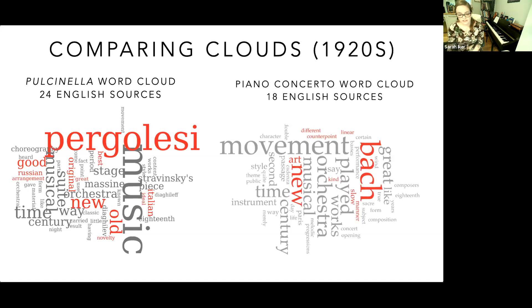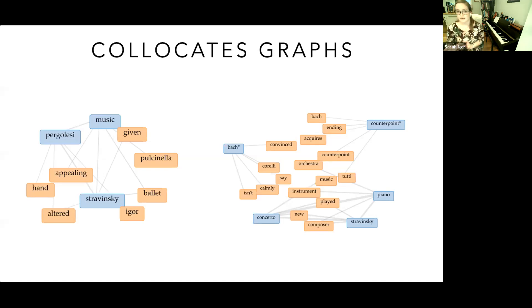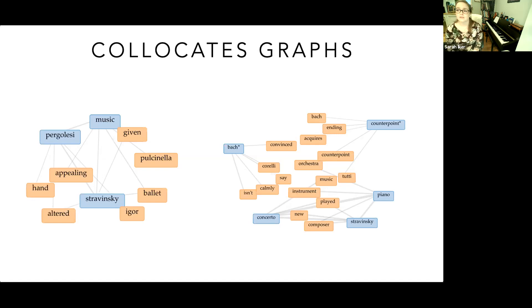I turned to another Voyant tool — Collocates — where I could get a better sense of prominent words and their relationships to one another. These are two of those graphs: the left-hand side for Pulcinella, the right-hand side for the piano concerto. I was able to use the word clouds to guide more detailed searches, focusing on words I wanted to know more about. The lines show us the relationships between words, how commonly they're linked. On the right-hand side I honed in especially on how the piano concerto relates to the ideas of Bach and counterpoint.